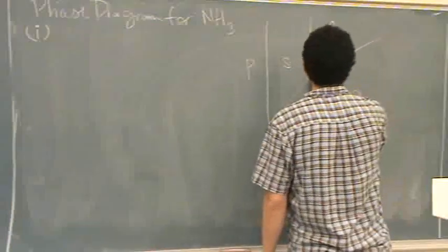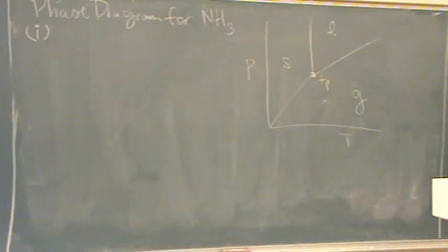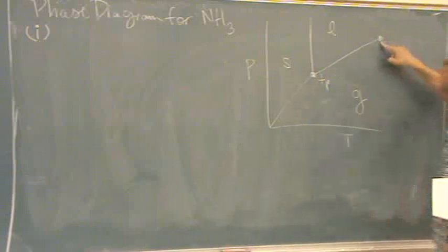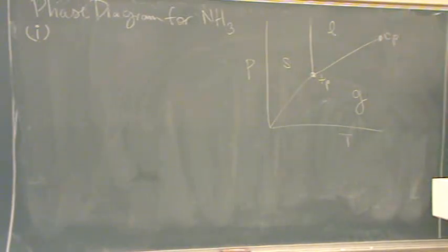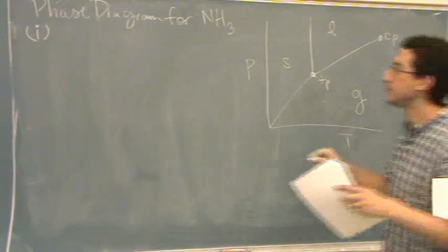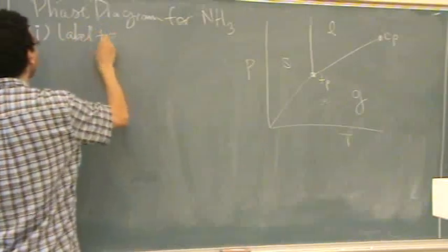Let's label all the points that we know. I'll put TP for triple point up here. What's this one up here called? Yeah, CP. I'll just put CP for critical point. So part I is label triple point. We already did that.